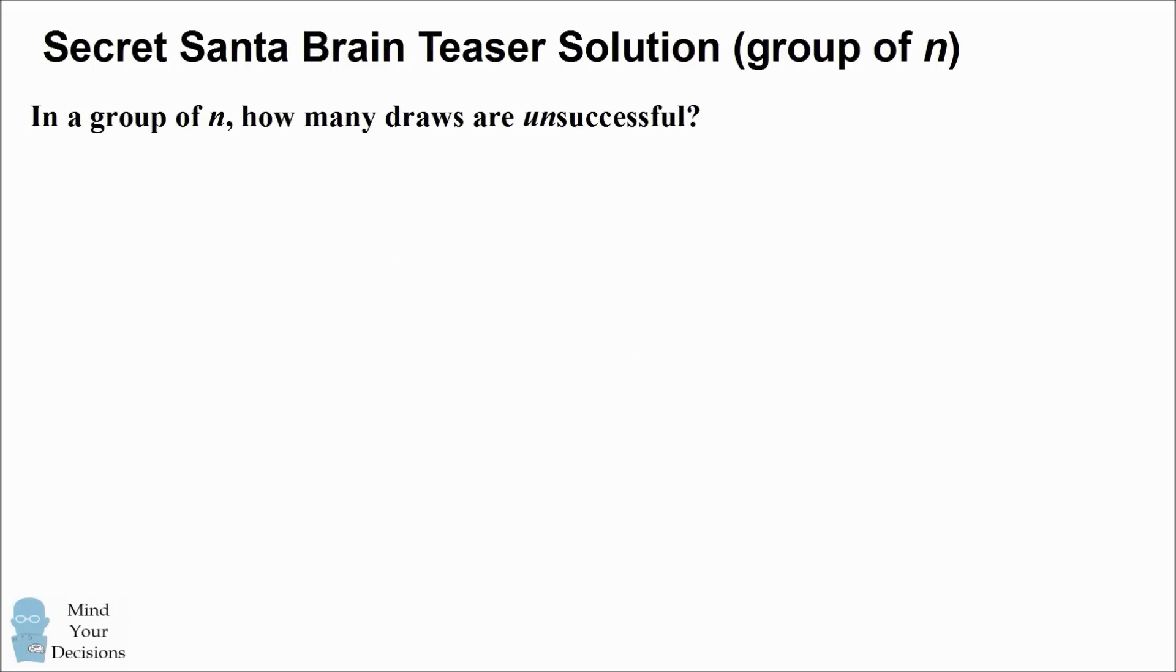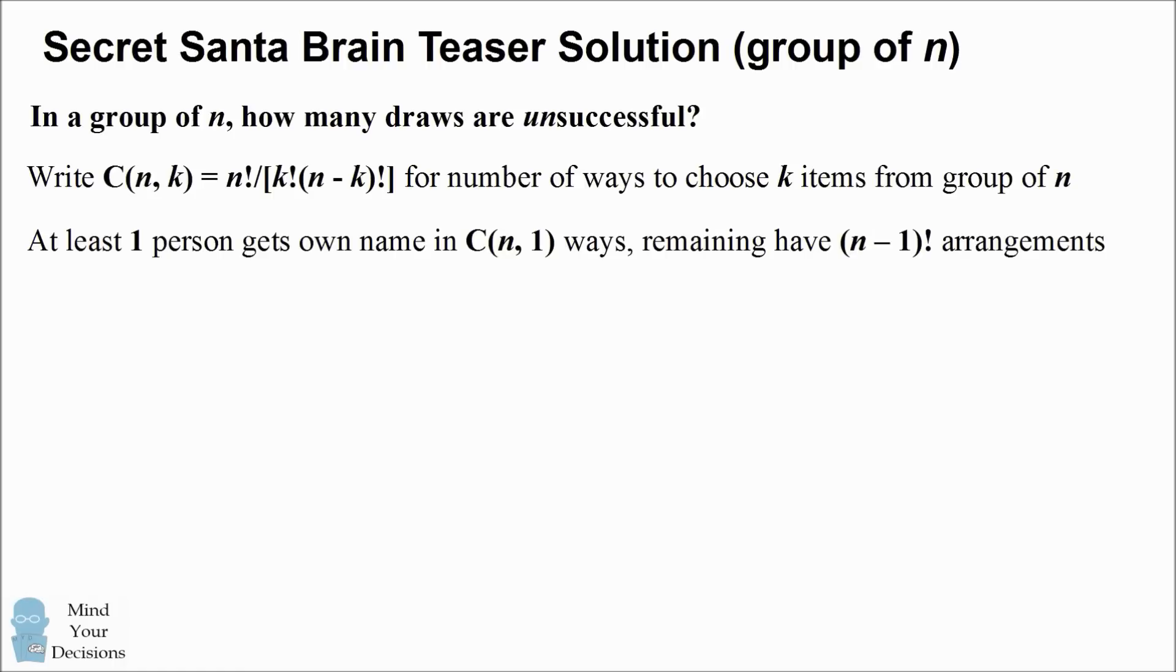So the trick in this puzzle is you want to count the number of draws which are unsuccessful. That is, you have at least one person picking his own name. So what we're going to do is count the number of ways at least k people choose their own names. In order to do that, we're going to need the binomial coefficient n choose k, which is the number of ways that you can choose k items from a group of n. How many ways will at least one person get their own name? Well, if one person gets their own name, there are n-1 arrangements of the remaining people, so that becomes (n-1) factorial. There are also n choose one ways of picking that one person.